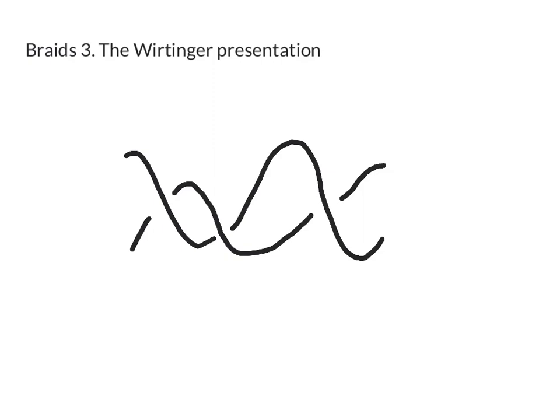In this video we're going to see how to write down a presentation of the fundamental group of the complement of a knot. The knots we're going to look at are in so-called braid form and we'll see later that any knot can be put into braid form. So let's see what that means.